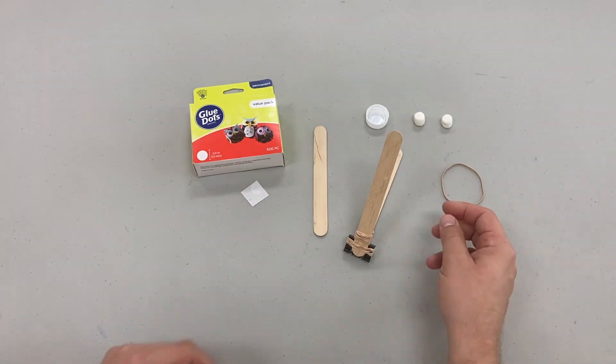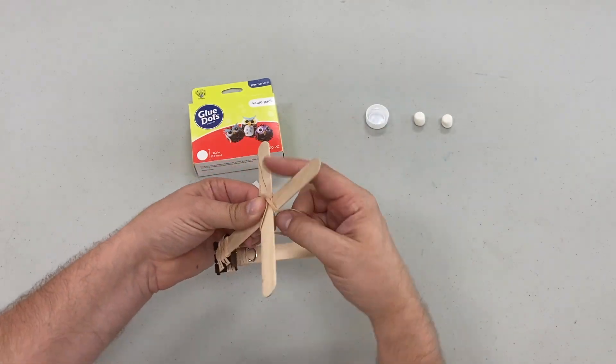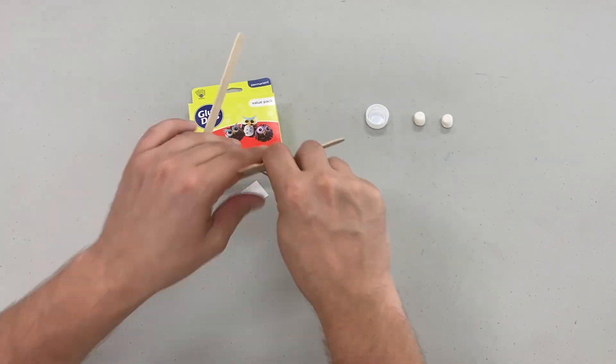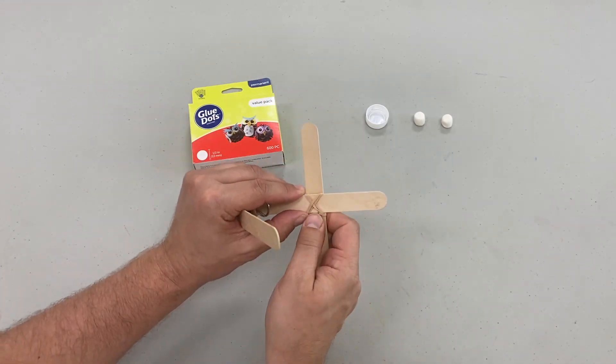Now that that's done we're going to build our base. Make a cross at the bottom and then just use a rubber band to loop and secure that popsicle stick in that cross shape, and that'll give your catapult a lot of stability when you fire it.